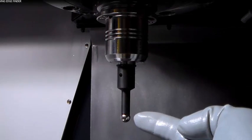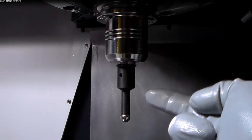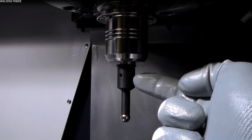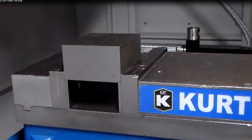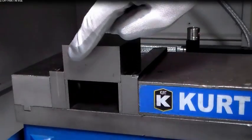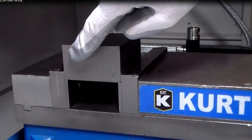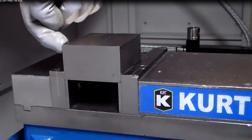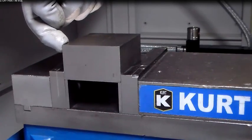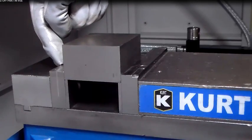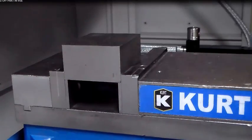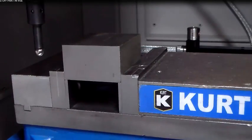The edge finder that we're going to use has a 400 thousandths ball, and the light will come on when it touches metal. For this part, we're going to use the left side of the part to set X and the far side of the part to set Y. The reason why is because we indicated that far edge, so we know that edge is straight. Let's bring down our edge finder and approach the left side.